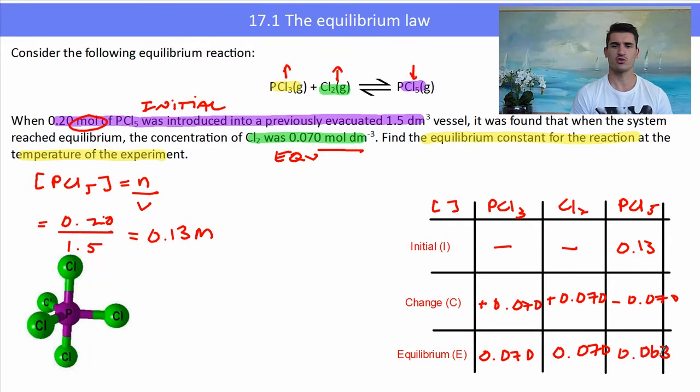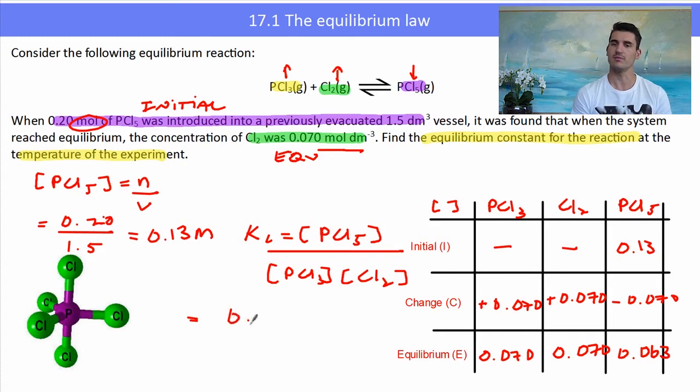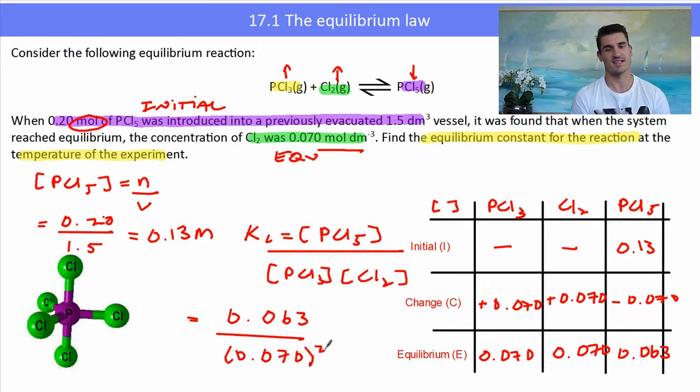Now we're in a position to work out the equilibrium constant by subbing it into the equilibrium law. Our constant will be [PCl₃] × [Cl₂] over [PCl₅]. Then I can sub in my values from the equilibrium row of the ICE table. The PCl₃ and Cl₂ are the same, so I've just squared the value, and that gives me a value of 13 and M⁻¹ because we would have M over M² as our units.